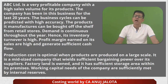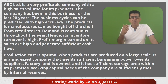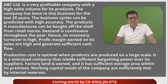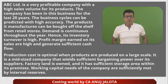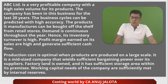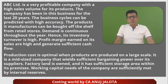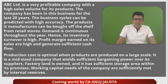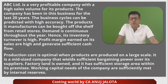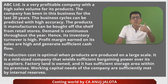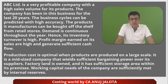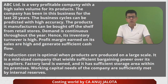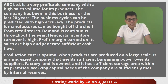Demand is continuous throughout the year, hence inventory turnover is very high. Profit margins earned on sales are very high and generate sufficient cash flows. The company is very profitable, with very high sales volume, established for 20 years. Business cycles can be predicted with high accuracy — meaning we know in which seasons demand will be high and in which it will be low. The products can be bought from retail stores off the shelf, and there are not many seasonal fluctuations.